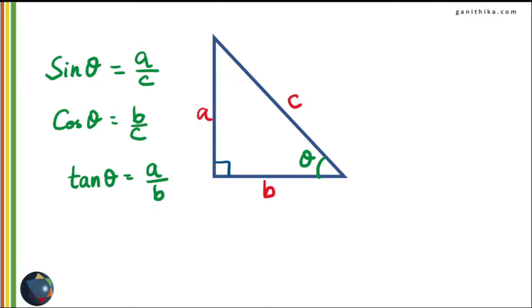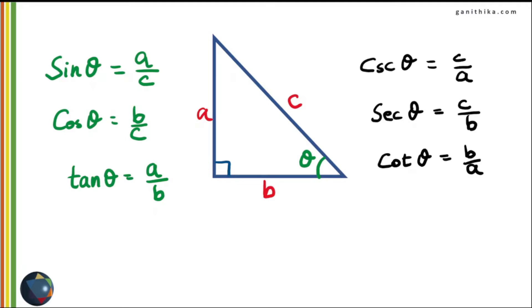Taking the reciprocal of these ratios gives cosecant theta equal to C over A, secant theta equal to C over B, and cot theta equal to B over A. Also in a right-angled triangle, Pythagoras theorem gives us A squared plus B squared equals C squared.